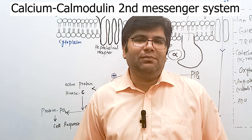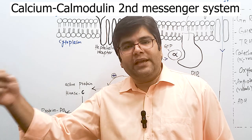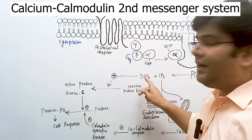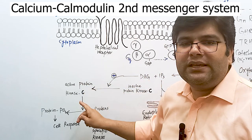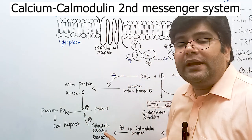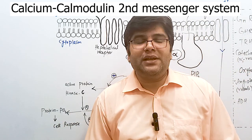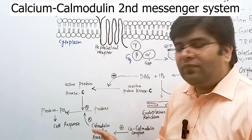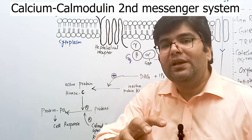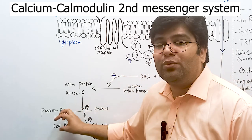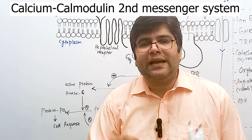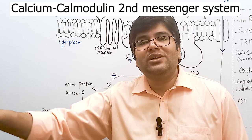In the cyclic AMP second messenger system, the kinase is protein kinase A. In the phospholipid system, DAG activates protein kinase C. In the calcium-calmodulin system, the activated kinases are called calmodulin-specific kinases. The function of all these kinases is to cause phosphorylation: ATP provides the phosphate group, which attaches to proteins in the cell — some proteins are activated, some are inhibited, and since many of these proteins are enzymes, many metabolic functions are affected.